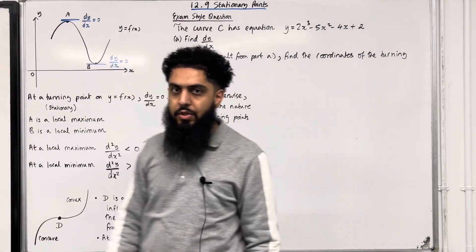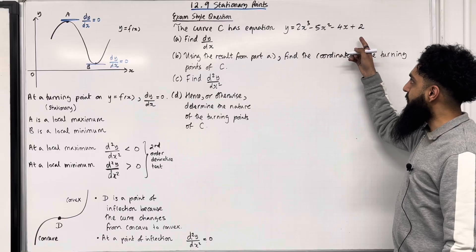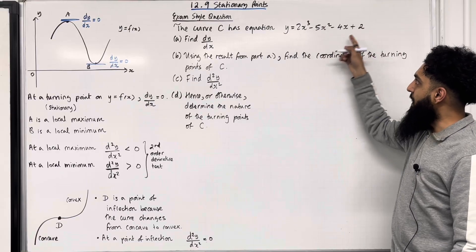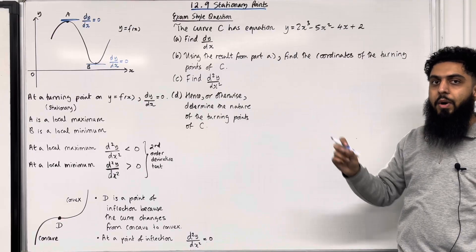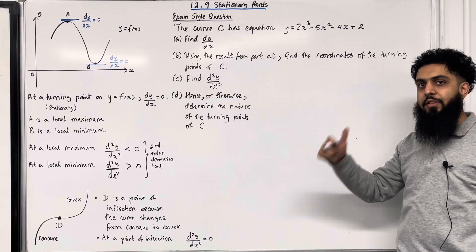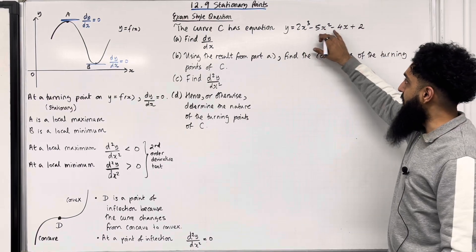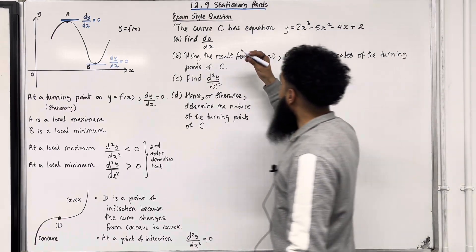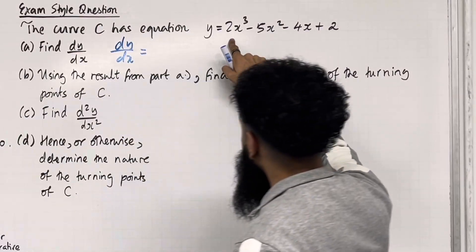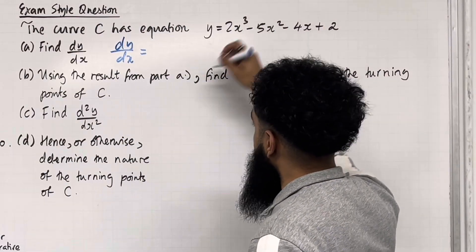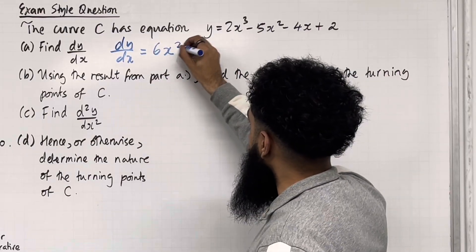Let's go through the solution to Part A. We want to differentiate y with respect to x. We have a polynomial. To differentiate a polynomial, bring down the power, multiply by the coefficient, and then subtract 1 from the power. Differentiating term by term: the first term differentiates to 2 × 3 = 6, giving 6x².